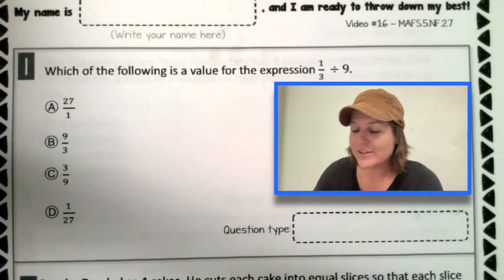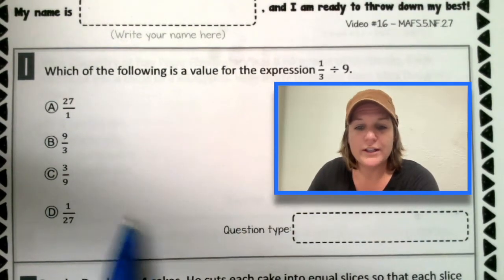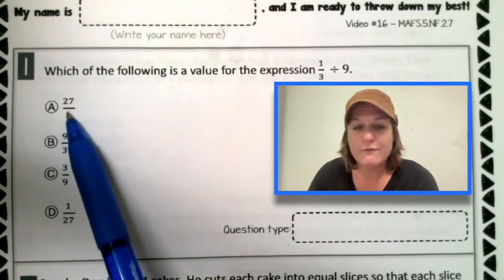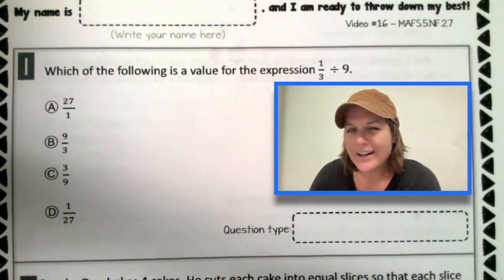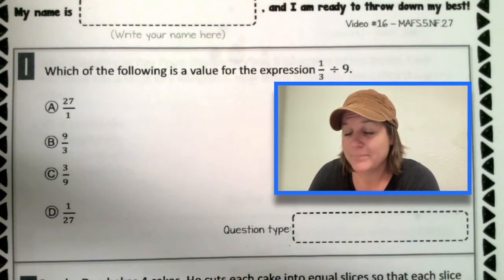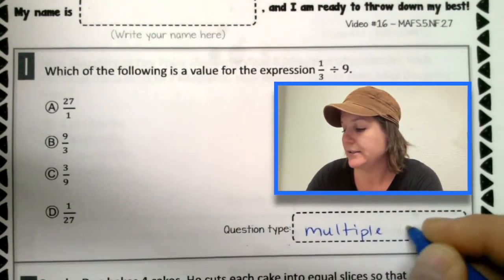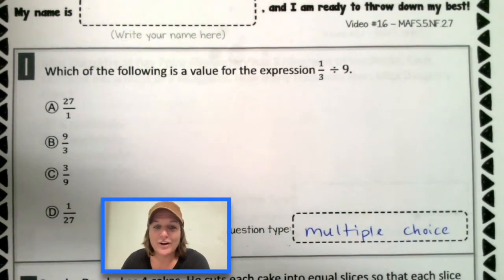All right, everybody, welcome back. So here we are with number one and let's go ahead and identify that question type first. I'm seeing four answer choices. So what kind of question do you think this is? It's a multiple choice. You're right. Jot that down if you have not already.